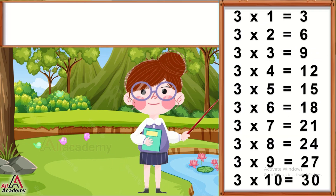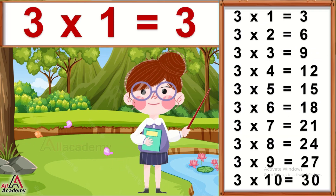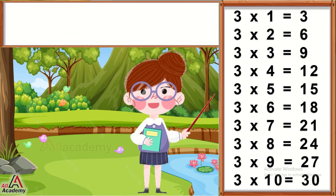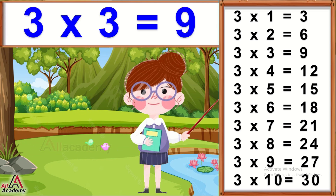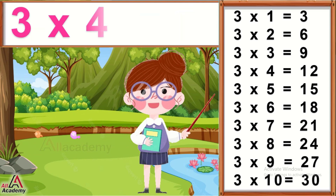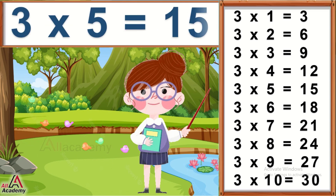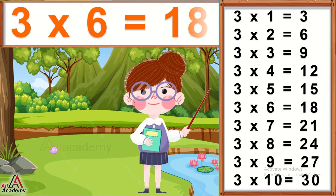Three ones are three. Three twos are six. Three threes are nine. Three fours are twelve. Three fives are fifteen. Three sixes are eighteen.